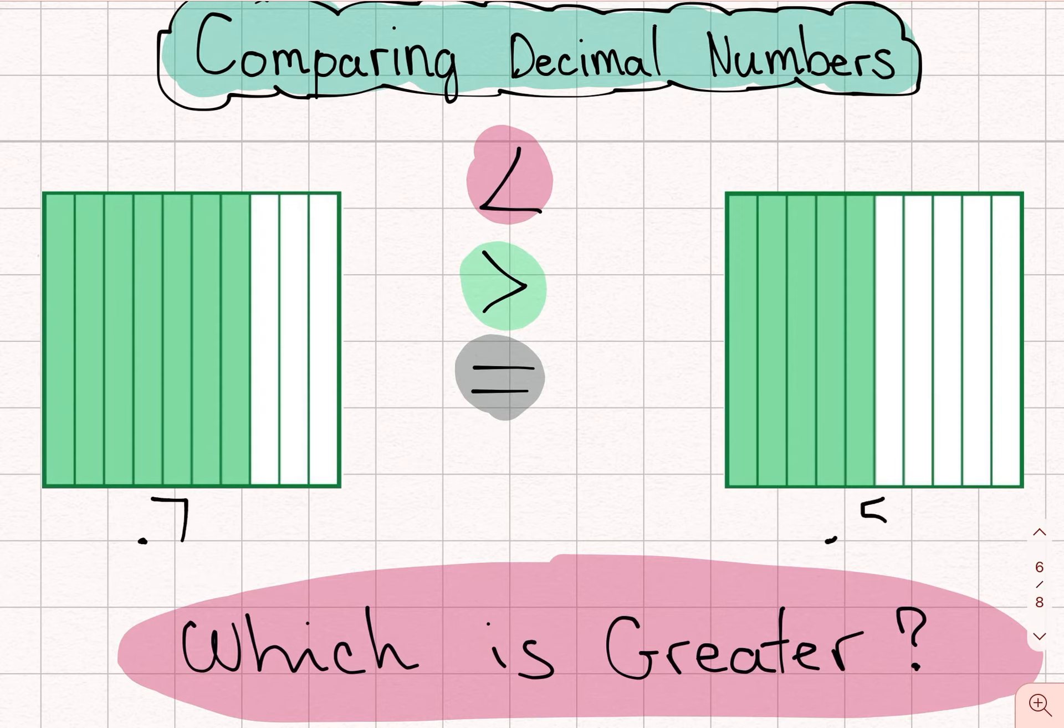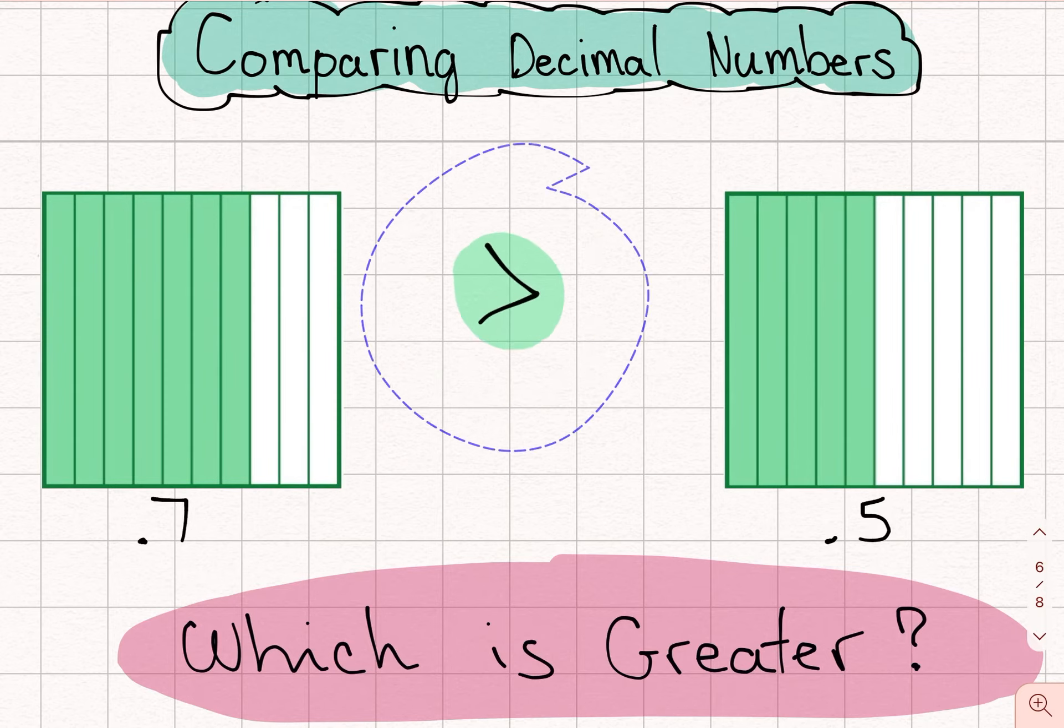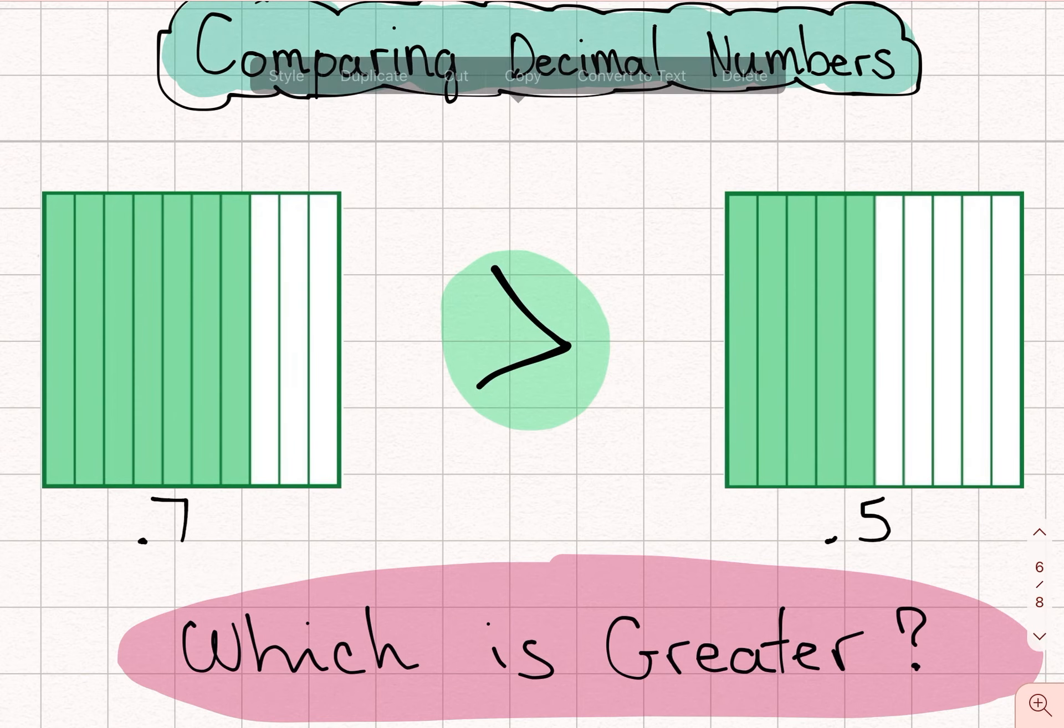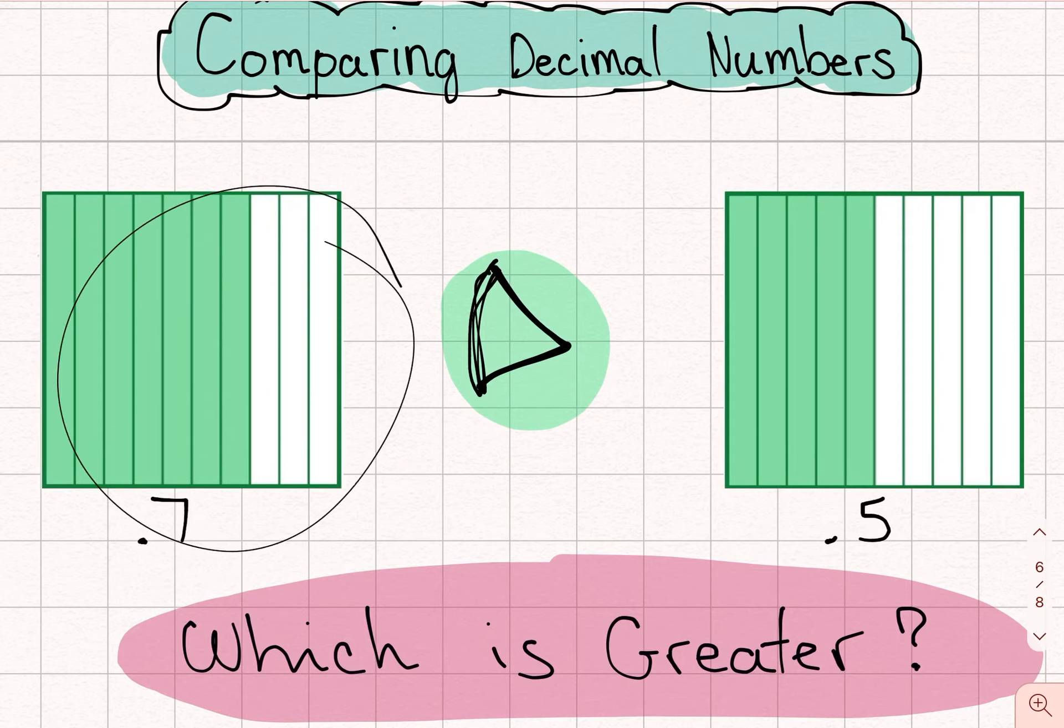So I'm going to go ahead and write 5 tenths. So what is greater, 7 tenths or 5 tenths? Well, I know that 7 is greater than 5. So this one is pretty straightforward. For this one, I would say that 7 tenths is greater than 5 tenths. So I would use this symbol here. Again, notice that the side that's bigger is pointing to the bigger number. We'd say that 7 tenths is greater than 5 tenths.